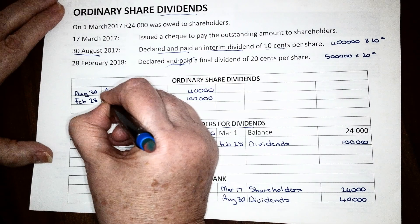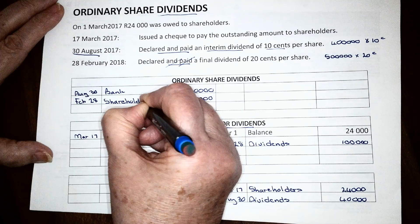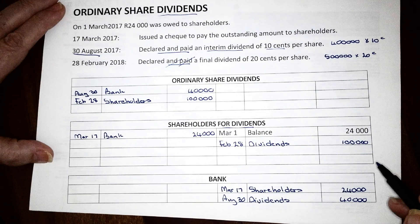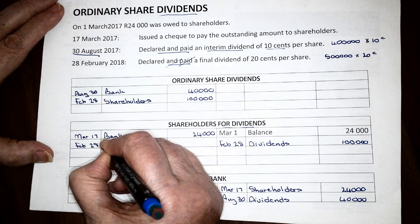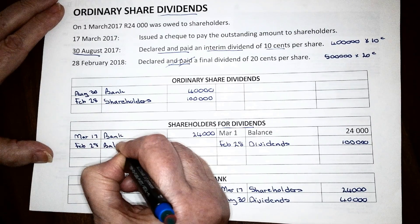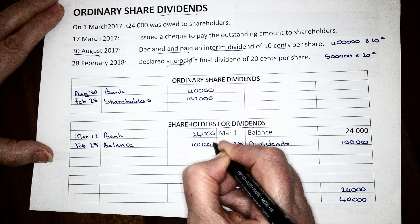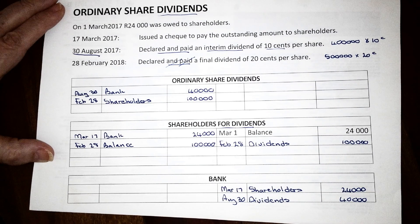We will debit the ordinary share dividends and indicate that this amount is owed to the shareholders. What is very important here is that if we don't pay the final dividend, the closing balance at the end of the year for shareholders for dividends will always equal the final dividend — so that balance will be 100,000 Rand. This is important to remember when we get to cash flow statements, so you can determine from the closing balance what the final dividend declared was.